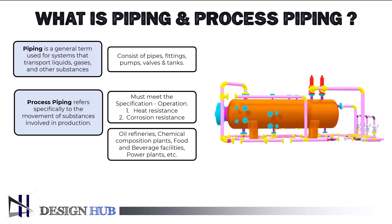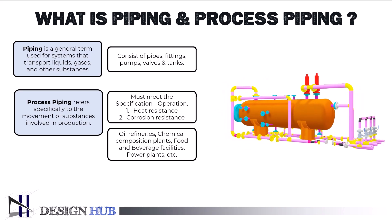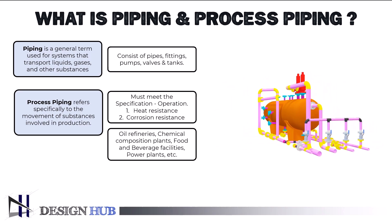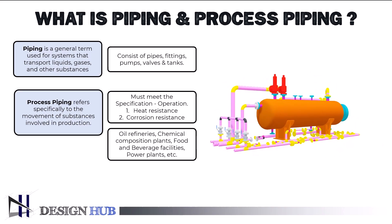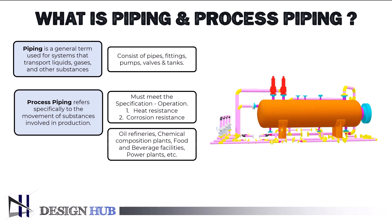Industries using process piping include oil refineries, chemical processing plants, food and beverage facilities, power plants, paper mills, breweries, wastewater treatment facilities, pharmaceuticals, and HVAC systems.